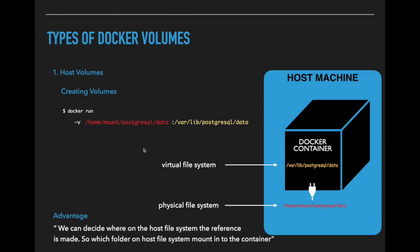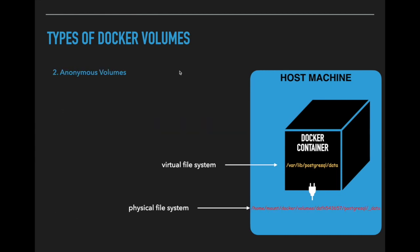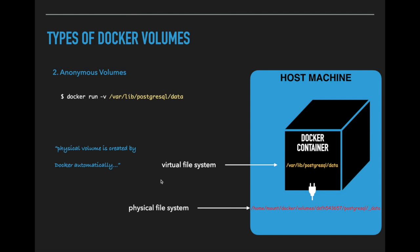The advantage of host volumes is that we can decide where on the host file system the reference is made — which folder on the host file system is mounted into the container. The second type is anonymous volumes, created by just giving the reference of the folder in the virtual file system of the Docker container. In this case, the folder in the physical file system on the host machine is created by Docker itself automatically, and that is the reason it is called an anonymous volume.